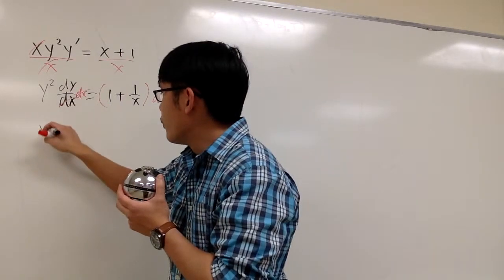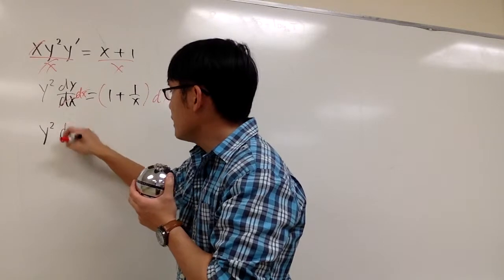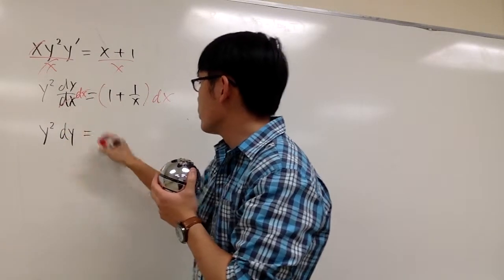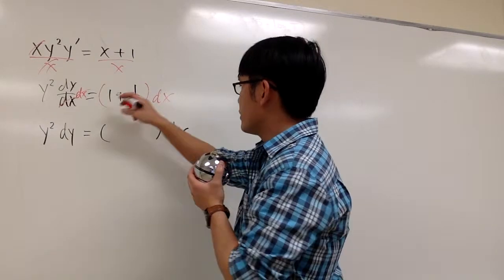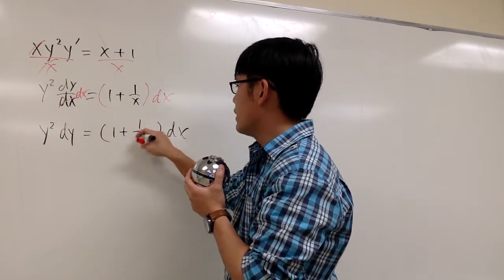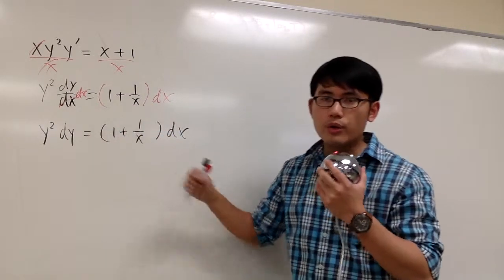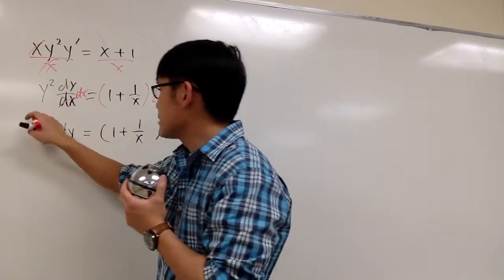So we have y squared dy, and this is equal to, on the right-hand side, we have dx right here, and we have 1 plus 1 over x. And we are good to go. We can integrate both sides now. So let's go ahead and do that.